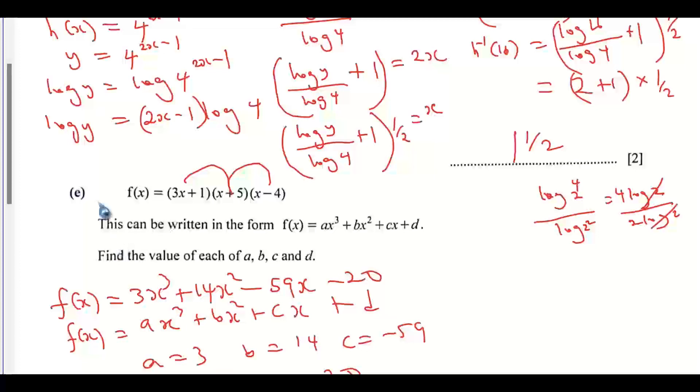This is question 9e. We have to expand this expression and compare it with this. When I was expanding, I made a mistake here. This should be 4x squared, not 14x squared. You should have 4x squared here. When you compare the left hand side with this expression here, b should be 4 and not 14. The value of b should be 4 and not 14.